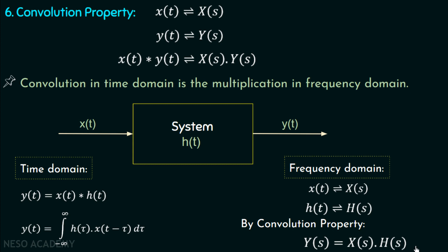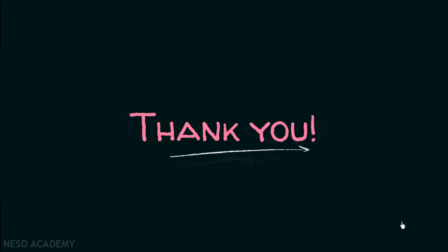This is the significance of the convolution property, and with this we are done with the discussion of Laplace transform properties. We have two more lectures left in the review of Laplace transform. In the next two lectures, we will take some examples based on inverse Laplace transform, and we will see how we can calculate the time domain function when given the frequency domain function. So now we are done with this lecture. See you in the next one.